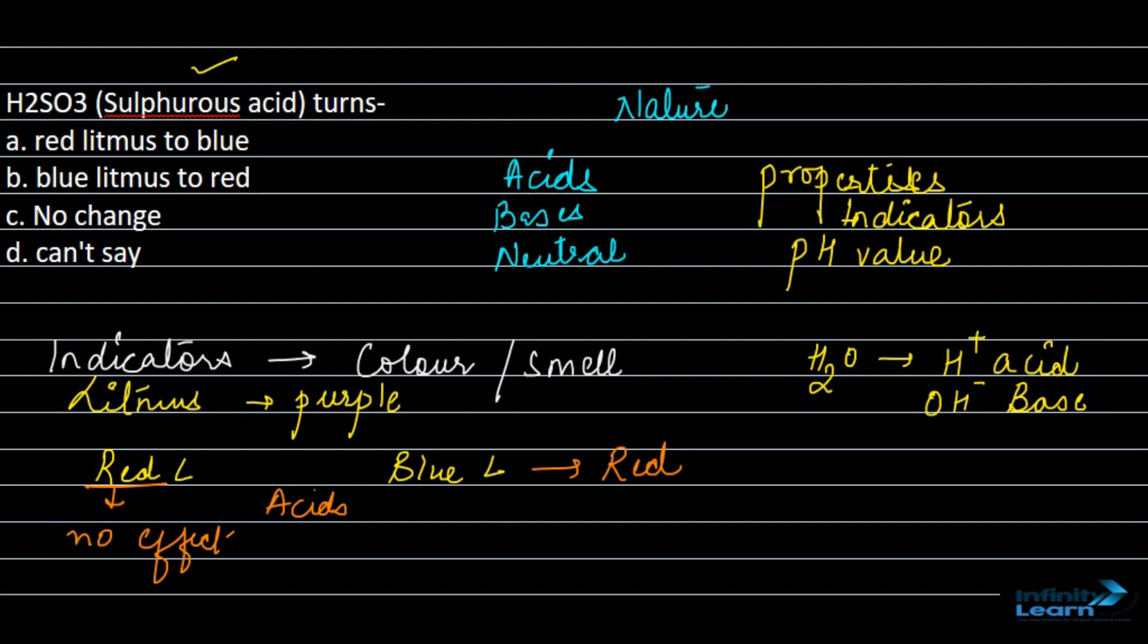So in option A, it is red litmus to blue. No, it doesn't turn - none of the acids turn red litmus blue. So that means it is incorrect. Blue to red? Yes. All the acids turn blue litmus to red in color.